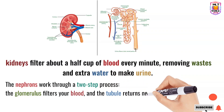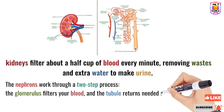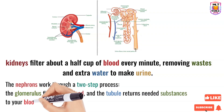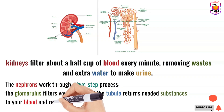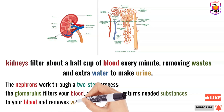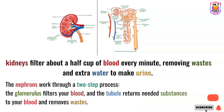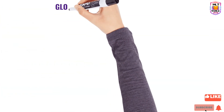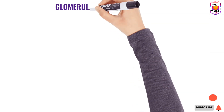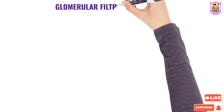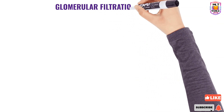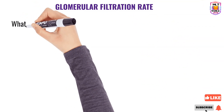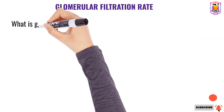First, the glomerulus filters the blood, and tubules return needed substances to the blood and remove waste through our body in the form of urine. Now we will focus on our main lecture, which is glomerular filtration rate.